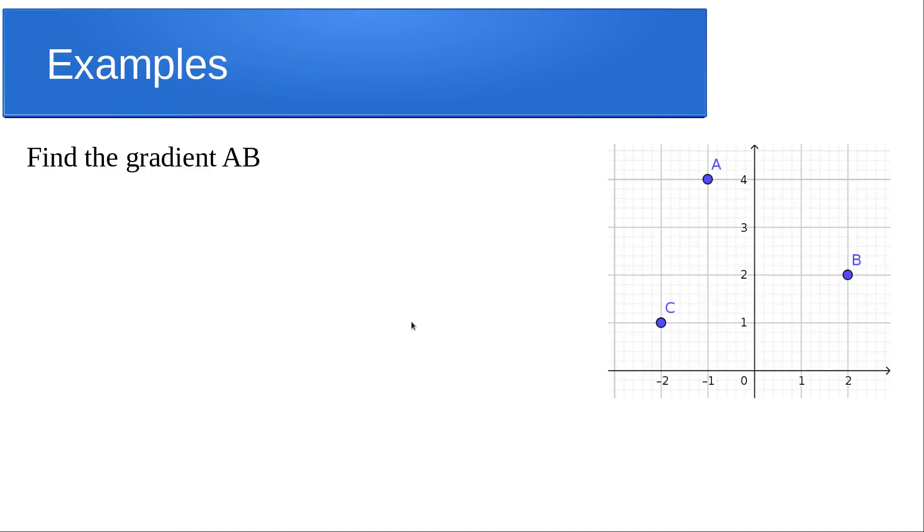Okay, now for a couple of examples. We're going to do the gradient of AB. So we're going to start off with the formula. A is going to be my X1, Y1. B is going to be my X2, Y2.